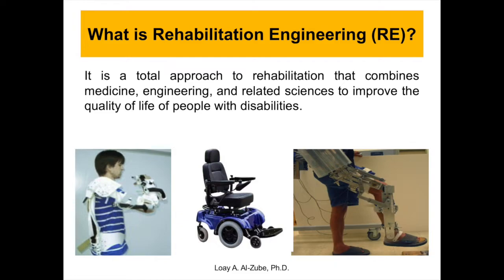The definition of rehabilitation engineering is a total approach that combines medicine — understanding anatomy, physiology, and muscle groups, how upper and lower extremities work — with engineering, which is kinetics and kinematics, and related sciences. For example, when muscles move, we consume energy; energy is ATP, and that's chemistry. That's what we mean by related sciences. The goal is to improve quality of life for people with disabilities: we want people to live longer, healthier, independent, and more productive.